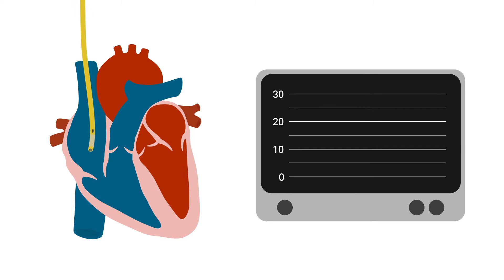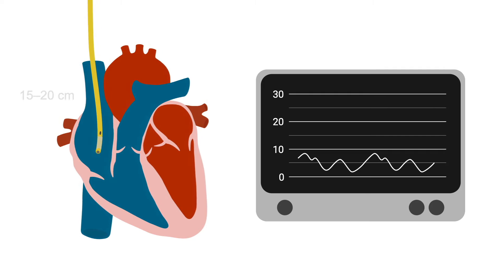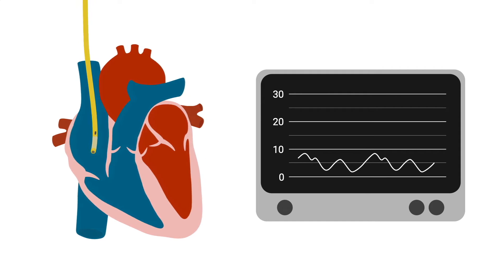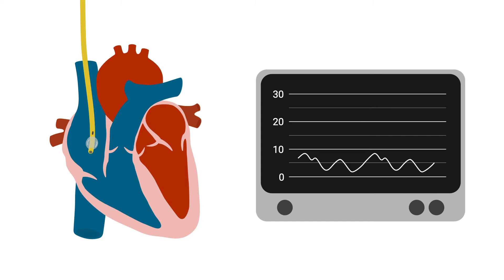As you advance the catheter, the first pressure waveform you will see is the central venous waveform, which is the same as the right atrium. Your catheter typically reaches the right atrium around 15-20 cm when using the right IJ. At this point, you'll inflate the balloon and advance the catheter with each heartbeat.